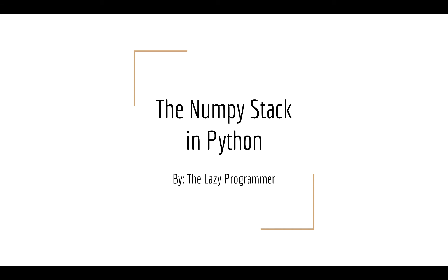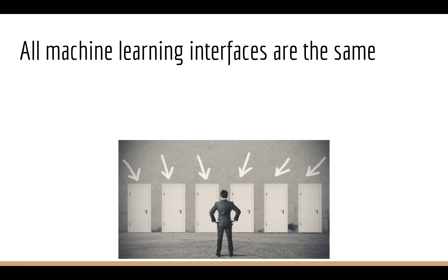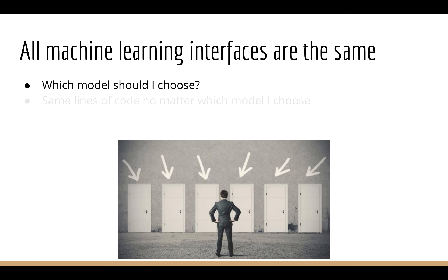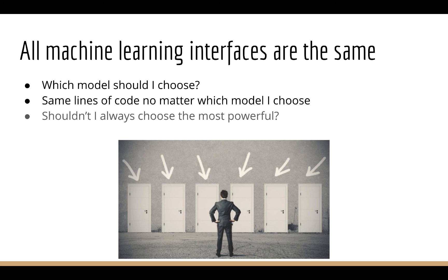Hey everyone, and welcome back to this class, the NumPy stack in Python. In this lecture, we're going to expand on this idea that all machine learning interfaces are the same. When I say this, this question immediately comes to mind: if all model interfaces are the same, then which model should I choose? In the code, it takes no more lines of code to use linear regression than it does to use a neural network. So why shouldn't I always just pick the most powerful model? And more importantly, how do I know which model is the most powerful in the first place?